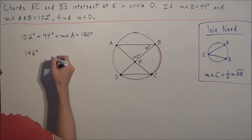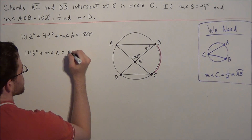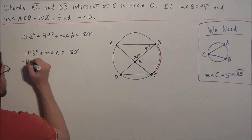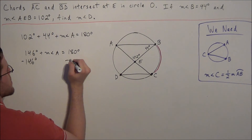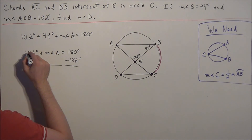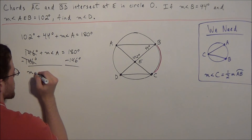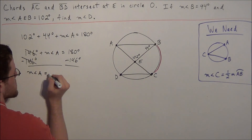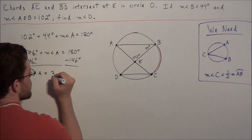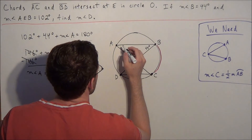We have 146 degrees plus the measure of angle A equals 180 degrees. Subtracting 146 degrees from both sides, the 146 degrees cancel, and we get the measure of angle A equals 180 minus 146, which is 34 degrees. We label this angle 34 degrees.